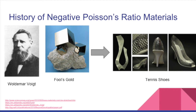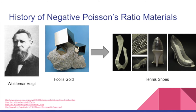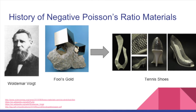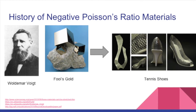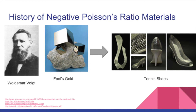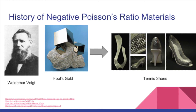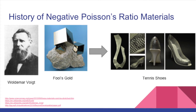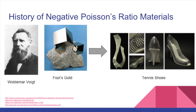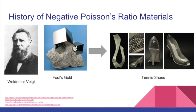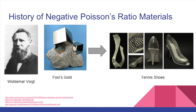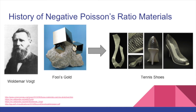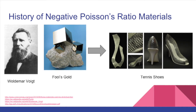Here's a little history. Negative Poisson's Ratio materials were discovered by a German physicist named Voldemort Voigt in the late 1800s. He published a paper in 1893 on iron pyrite, also known as fool's goat, which has a Poisson's Ratio of negative 0.14. However, at that time, no one could explain this phenomena and no one knew what to do with these materials, so the work went unnoticed for almost a century. Research resumed in the 1980s and resulted in some nice shoes.